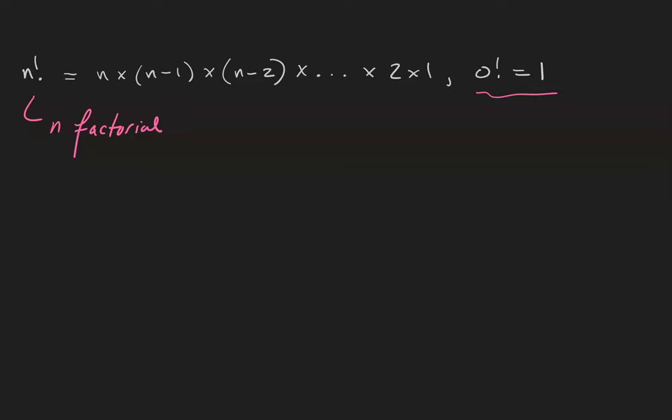Here are the first few factorial values. 1 factorial is just the product of 1 by itself, so that's 1. 2 factorial is 2 times 1, which is 2. 3 factorial is 3 times 2 times 1, which is 6.